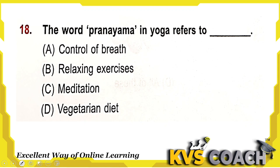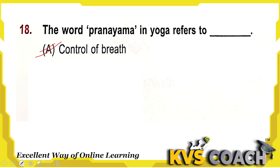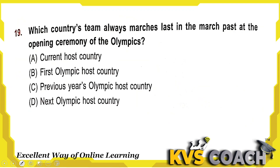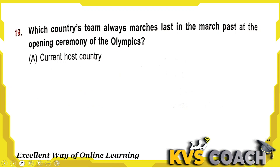Next: the word pranayama in yoga refers to what? Pranayama is control of breath. Option A is the right answer. Next: which country's team always marches last in the march past at the opening ceremony of the Olympics? It is the current host country that always marches last in the opening ceremony. Option A is the right answer.